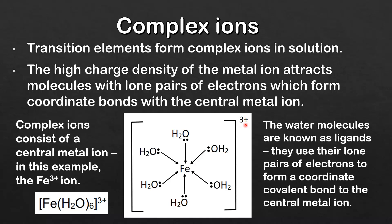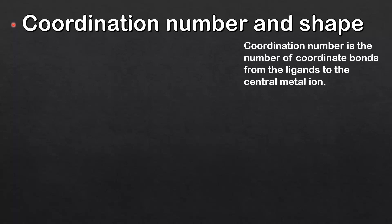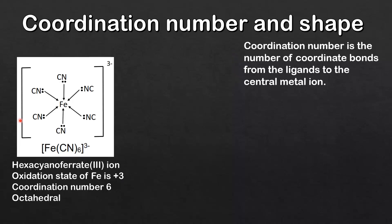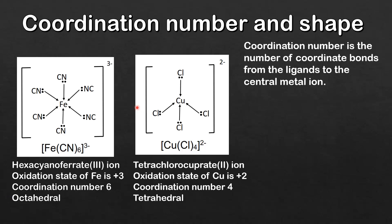Next we look at coordination number and shape. The coordination number is the number of coordinate bonds from the ligands to the central metal ion. Here's another example — this is the hexacyanoferrate 3- ion. The oxidation state of the ion is +3, the coordination number is 6 because there are six coordinate bonds formed with the central metal ion, and the shape is octahedral.